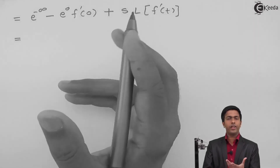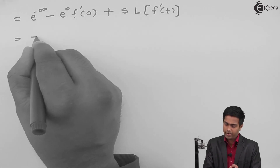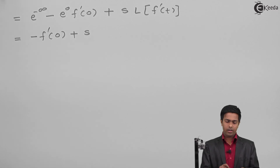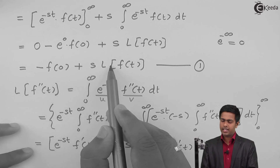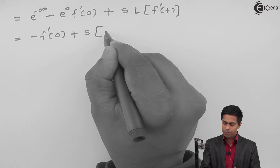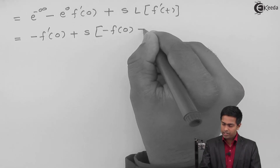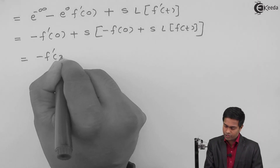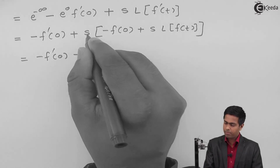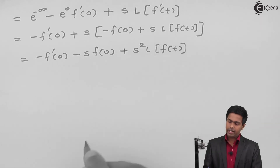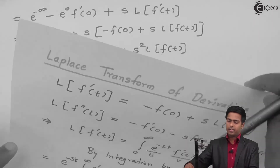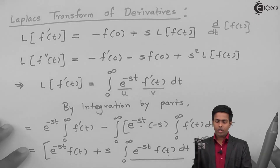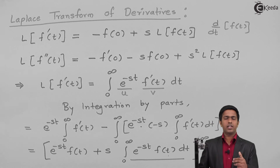Therefore, e^(−∞) = 0 and e^0 = 1, giving minus f'(0) plus s·Laplace of f'(t). Substituting the value of Laplace of f'(t) from equation 1, which is minus f(0) plus s·Laplace of f(t), and multiplying through by s, we get minus f'(0) minus s·f(0) plus s²·Laplace of f(t). We have proved the second result: Laplace of f''(t) equals minus f'(0) minus s·f(0) plus s²·Laplace of f(t). Thank you.